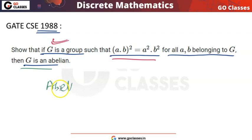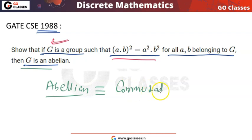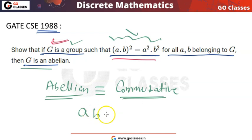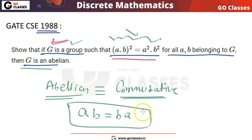Abelian means commutative. So what we have to prove is that any group which satisfies this equation is commutative. Commutative means ab = ba — this is the commutative property. So we have to prove that this type of group is commutative.